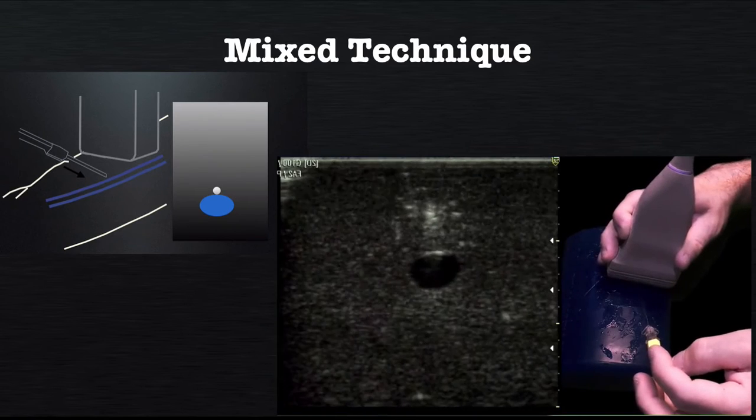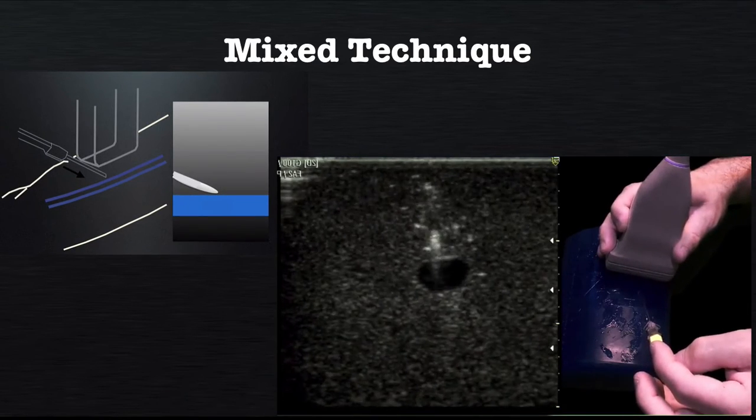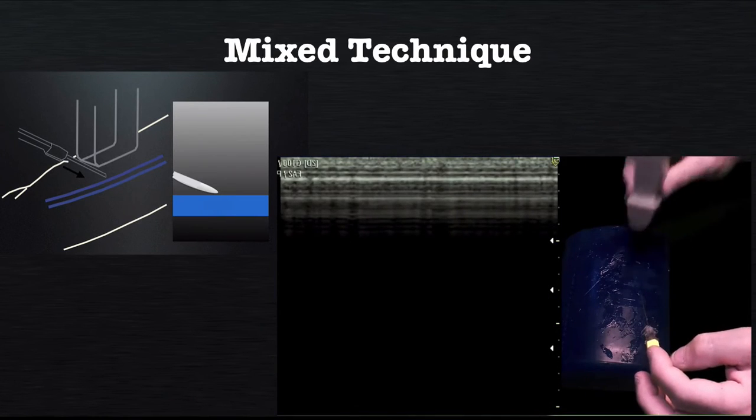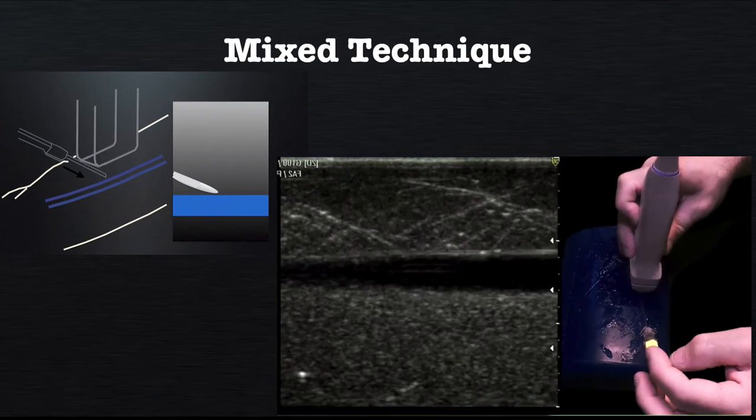When the needle is just above the vein, we can turn to the long axis or in-plane approach. Since the needle is localizing the vein, we know that we are looking at the vein in long axis when we see the needle just above the vessel.